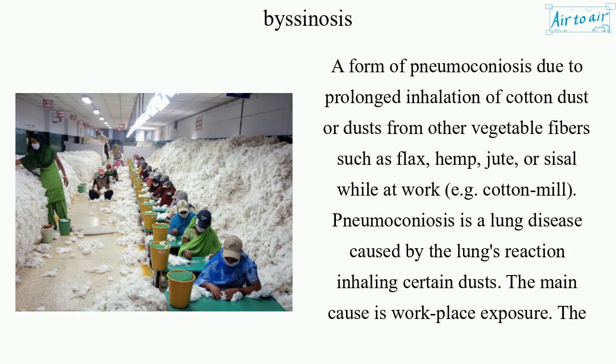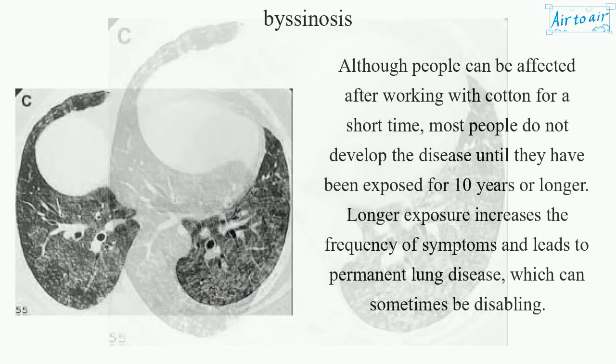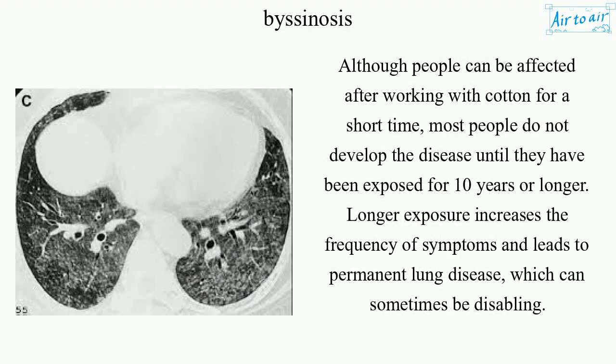Pneumoconiosis is a lung disease caused by the lung's reaction to inhaling certain dusts. The main cause is workplace exposure. The dusts can be asbestos particles, silica dust, and so on. Although people can be affected after working with cotton for a short time, most people do not develop the disease until they have been exposed for 10 years or longer. Longer exposure increases the frequency of symptoms and leads to permanent lung disease, which can sometimes be disabling.